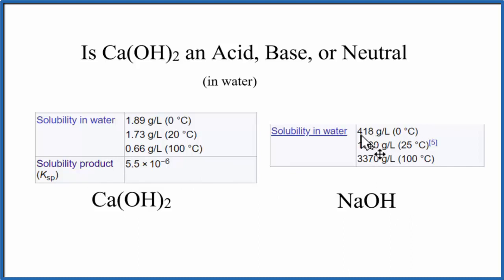NaOH, on the other hand, is 418 grams per liter—several hundred times more than calcium hydroxide. It doesn't have a Ksp. It really doesn't make sense since this dissolves so well.